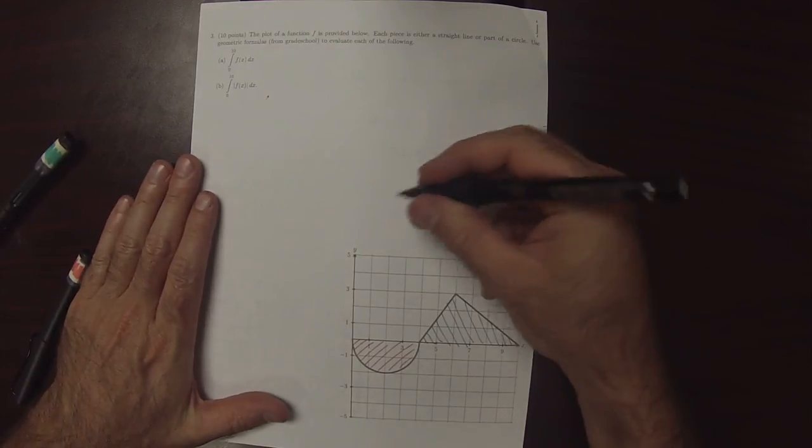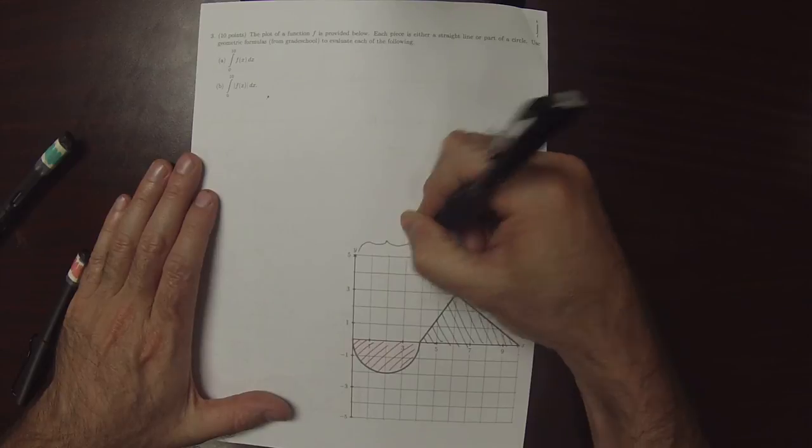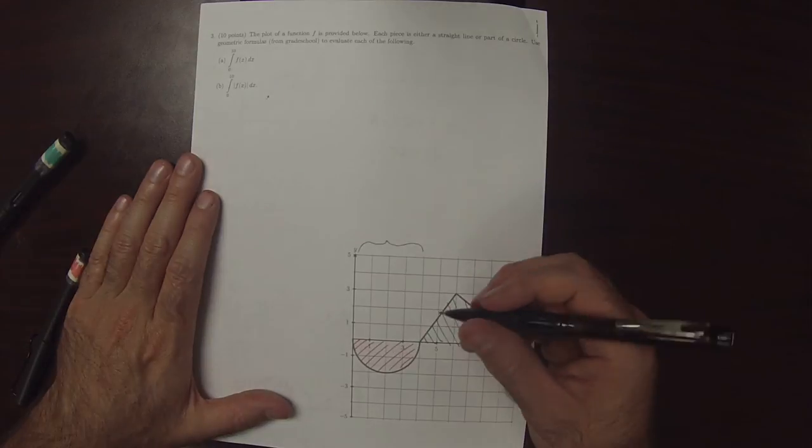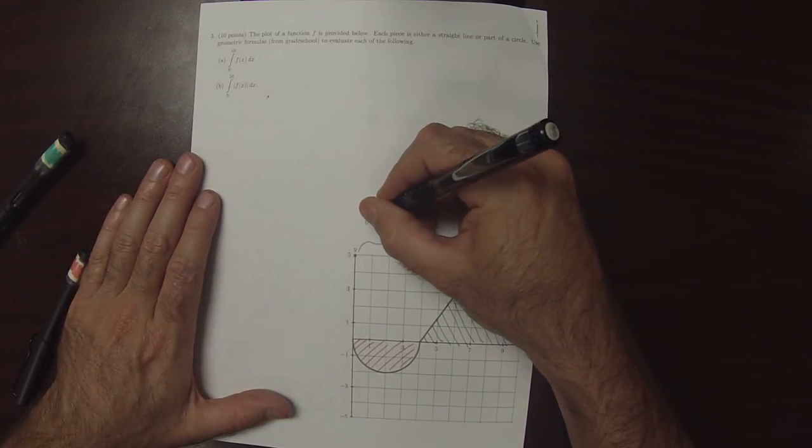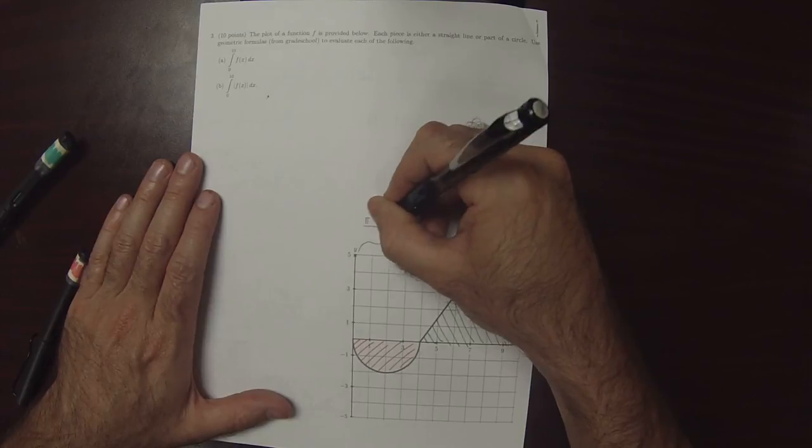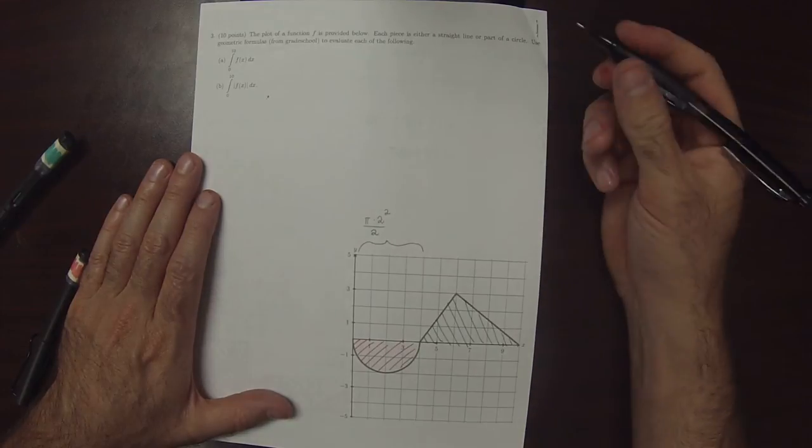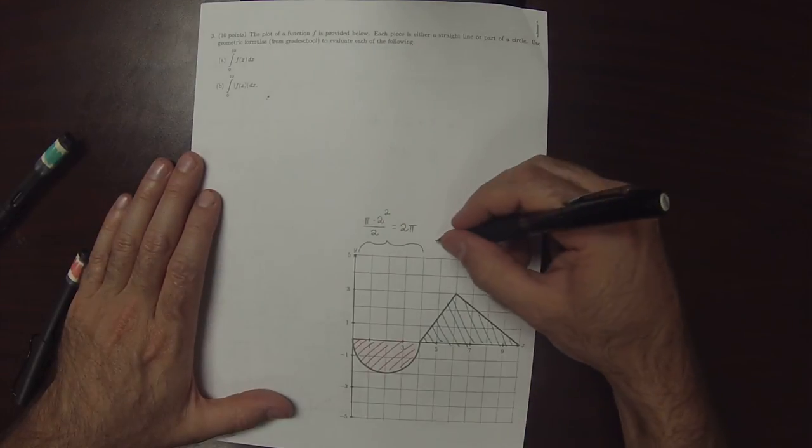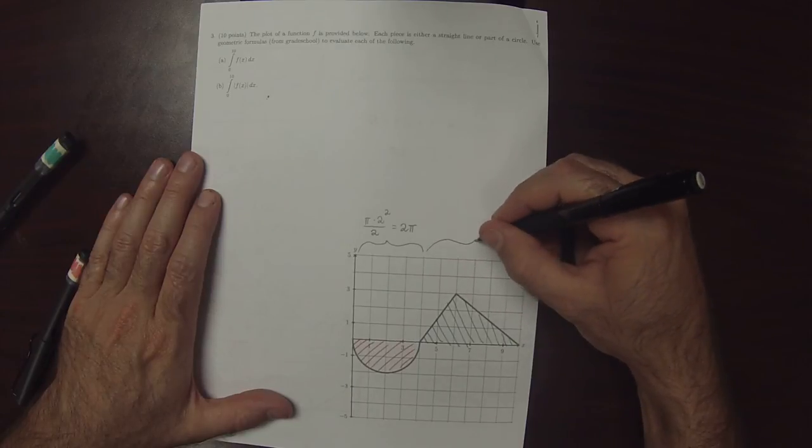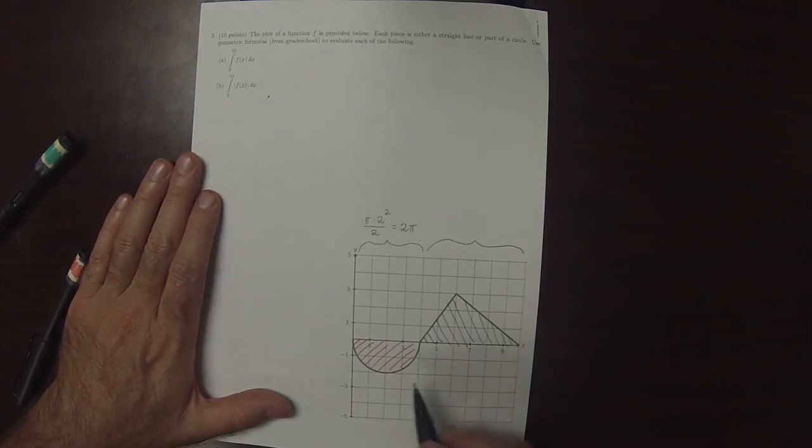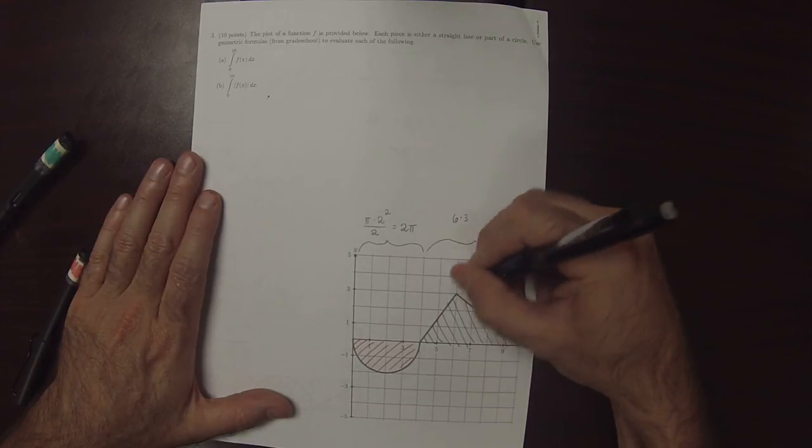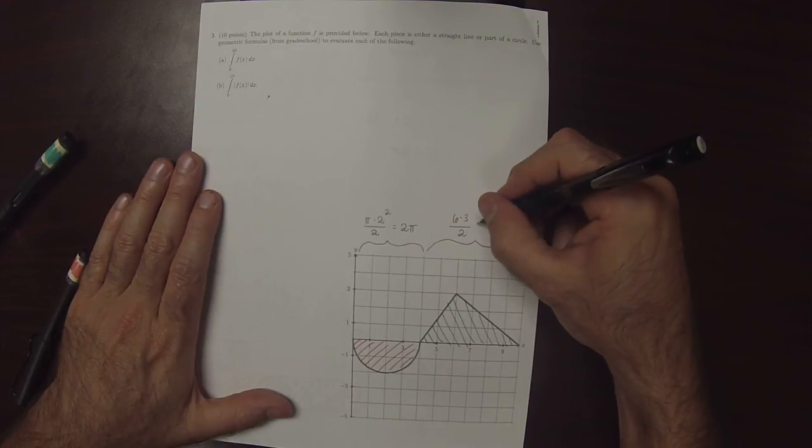Now, the area of the red is half of a circle. So, this would be pi multiplied by the radius is 2 squared over 2. Divide by 2 because it's half a circle. So, that would be 2 pi. And then this triangle. Well, that's base times height. So, that's 1, 2, 3, 4, 5, 6 times 3 is the height over 2. So, that's 9.